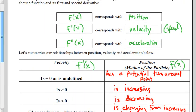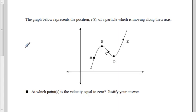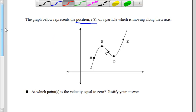If velocity is negative, then the position is decreasing. If the velocity changes from positive to negative, then the position changes from increasing to decreasing. For example, if I'm walking five meters per second to the right and then change to negative three meters per second, my position goes from increasing to decreasing. And vice versa, if I change from negative to positive velocity, my position changes from decreasing to increasing.